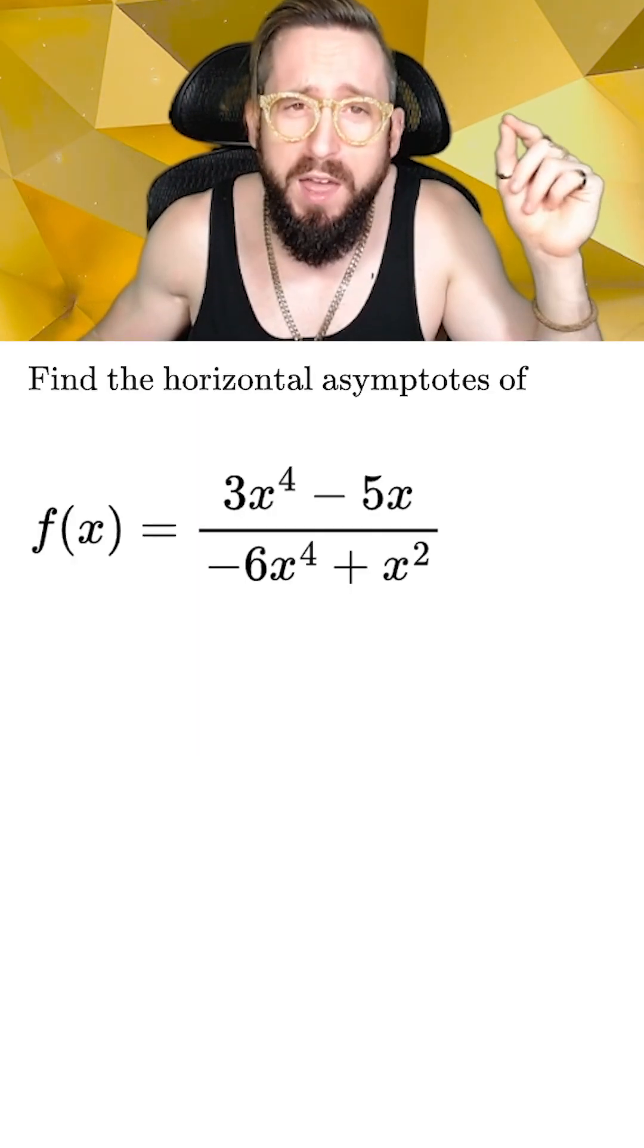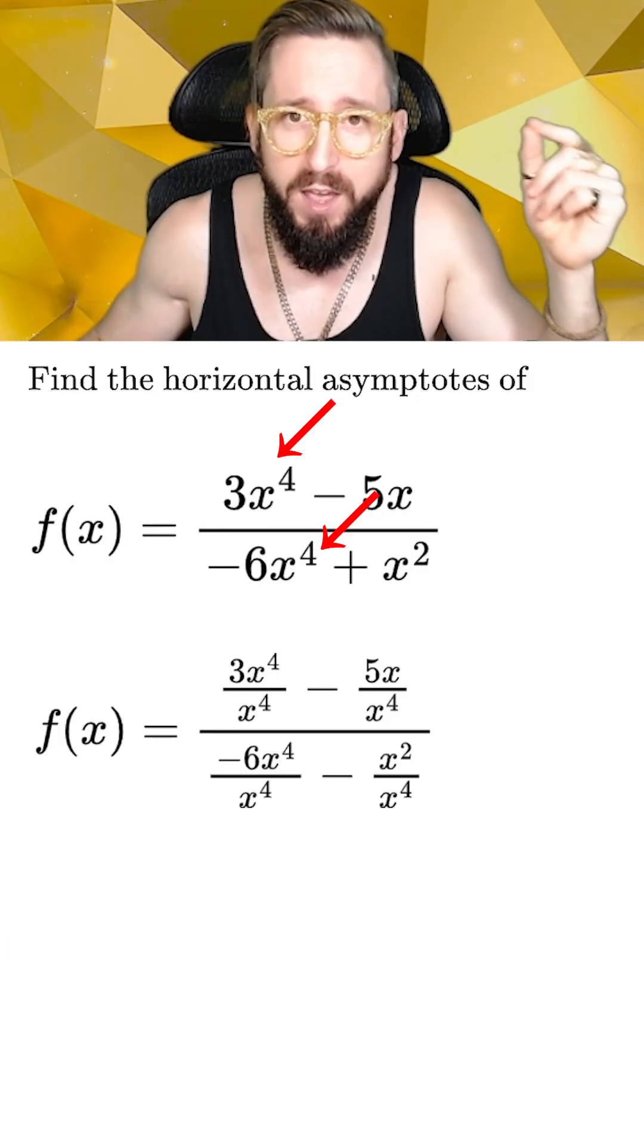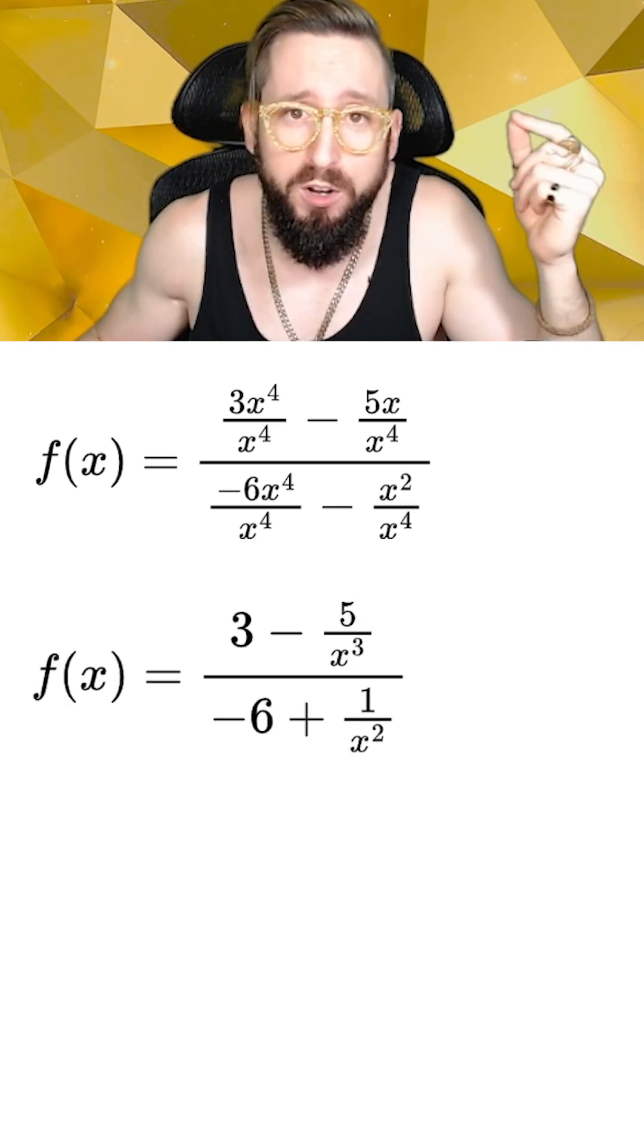Here's a different example where we'll end up having a non-zero horizontal asymptote. This time, we're just going to start off with our algebra trick and divide everything by the highest effective power of x, which is x to the fourth, and then we're going to simplify.